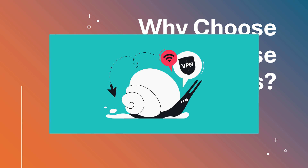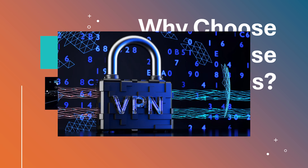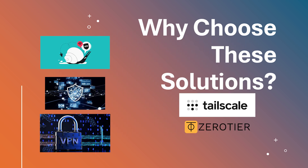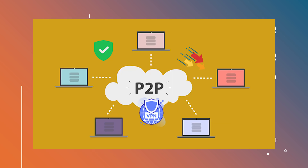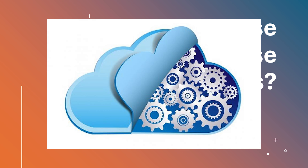Traditional VPNs often suffer from performance bottlenecks, complex setups, and security vulnerabilities. That's where TailScale, ZeroTier, and Twingate come in. Each of these platforms offers a modern approach to secure networking, leveraging technologies like peer-to-peer connectivity, zero-trust security, and cloud-based orchestration to provide a seamless experience.